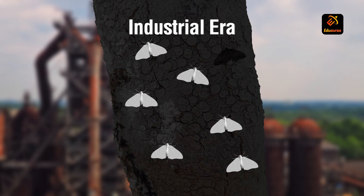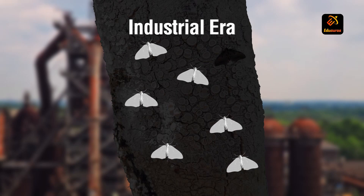The soot and fumes from the industries got stuck on the bark of the trees. As a result, the bark of the tree turned black in color.